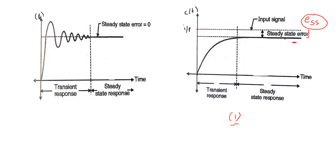Now you can see here the transient response in this figure is oscillatory, unlike the previous exponential one. After a certain point, the system output becomes constant and matches the desired output. This means there is no difference between desired output and actual output — in this case the steady state error ESS is zero.